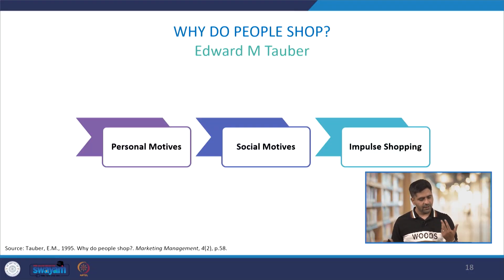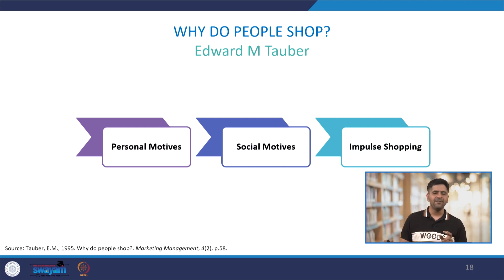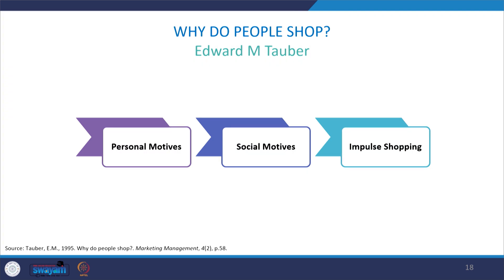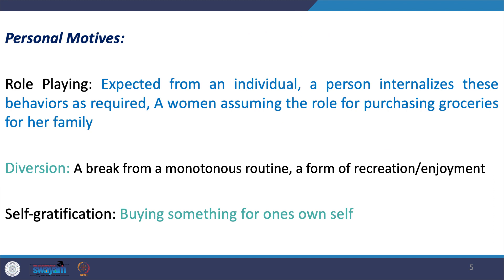Why people buy certain products and services happens on account of three motives: personal motives, social motives, and impulse shopping. This framework comes from a landmark paper by Edward M. Tauber — 'Why Do People Shop' — considered one of the most fascinating contributions to understanding consumer behavior in marketing and retailing. Whenever we talk about personal motives, these range across several factors, the first being role playing.